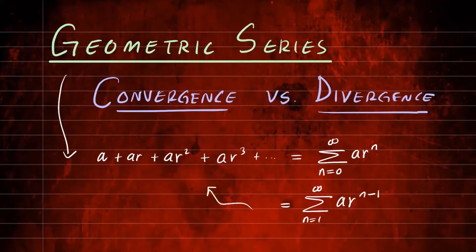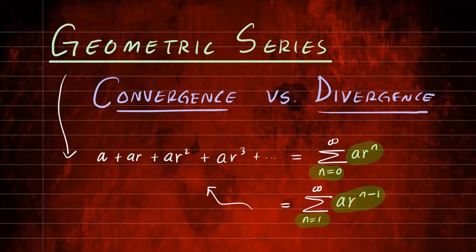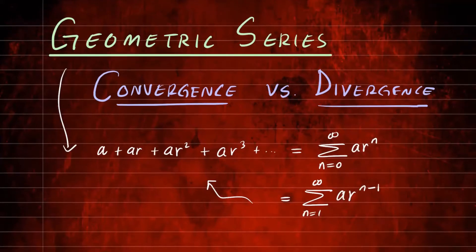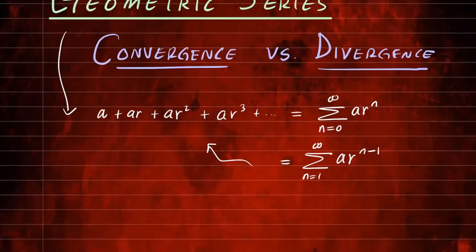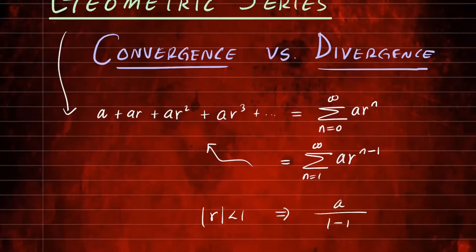You'll see that these give you the exact same terms — two different ways to express a geometric series. Be very careful how you express your geometric series. This series will converge to a value if r in absolute value is less than 1. It will converge to a over 1 minus r.